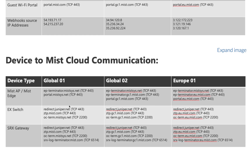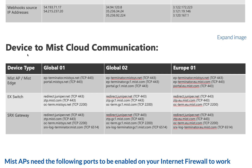The next table is also important: device to Mist cloud communication. For devices to talk to the Mist cloud — whether a Mist AP or Mist Edge registering to the cloud — you need to enable ep-terminator.mistsys.net on TCP 443. For an EX switch to talk, OC-term.mistsys.net on TCP 2200. You also need to allow redirect.juniper.net and ztp.mist.com on TCP port 443. Allow all these ports and URLs for devices to register onto the Mist dashboard. Again, Global 01 for AWS, Global 02 for GCP, and Europe 01 for the Europe instance.